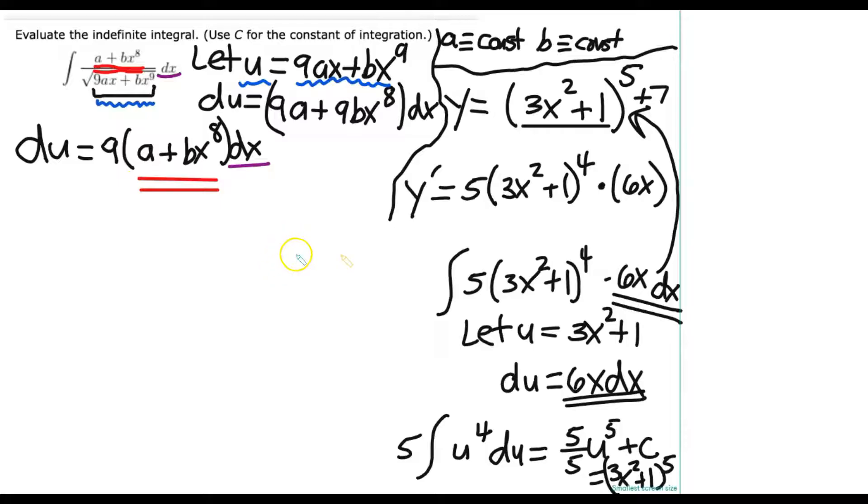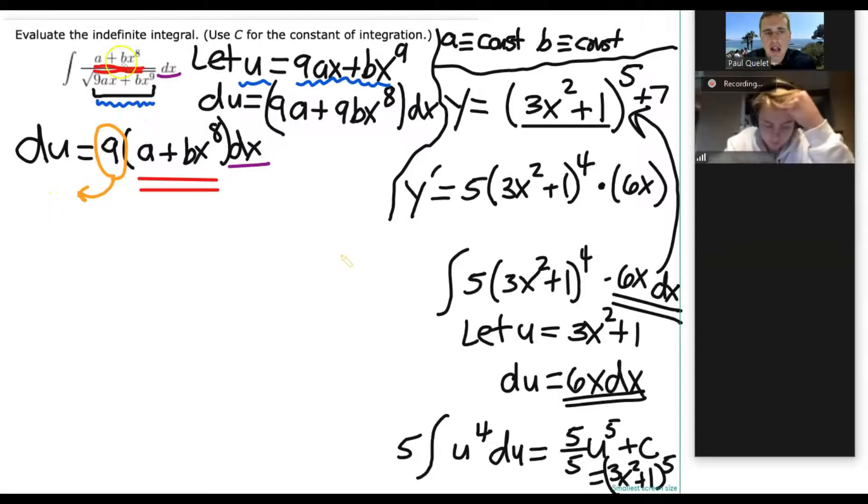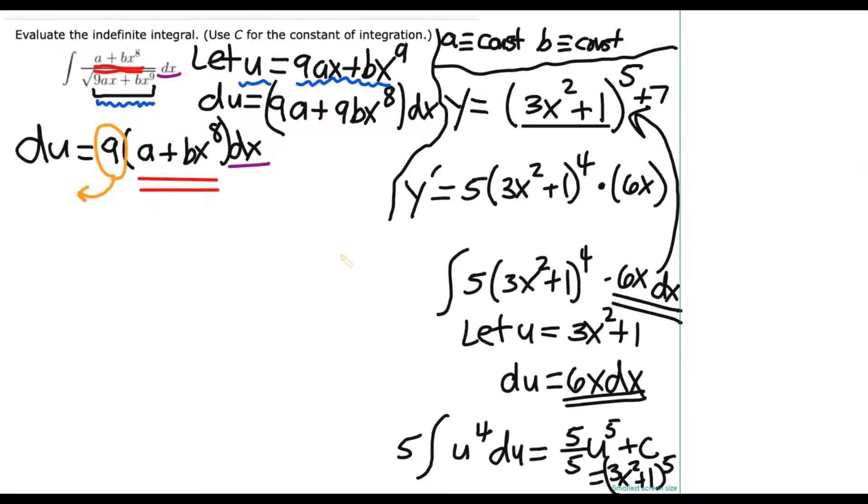The u is here, and that's going to go in right here, underneath the square root. And then finally, the dx, that is right there. Now, one more thing. Do you also notice that we have a straggler? We have a stowaway on board. That's this 9. So does it make sense to you that it might be useful to divide it to the other side? That way, the pieces that we're replacing are very direct. So we could say 1 over 9, du, is a plus bx to the eighth, in parentheses, times dx.